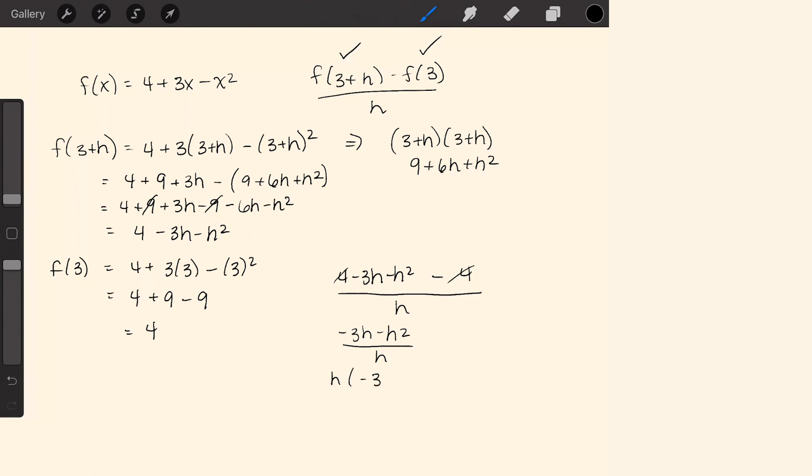h times (negative 3 minus h), all over h. The h's cancel. We're left with negative 3 minus h.